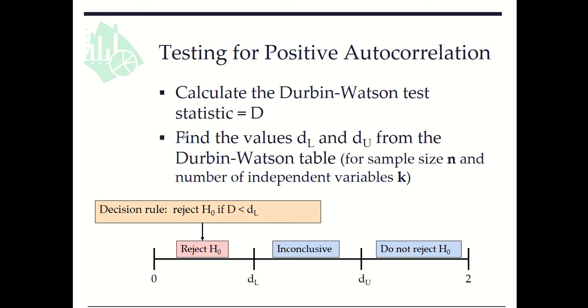Here is the process. We calculate the Durbin-Watson test statistic D. Then we find the values dL and dU from the Durbin-Watson table. The table is in our textbook. For sample size n and number of independent variables k, we can find the values of dL and dU.